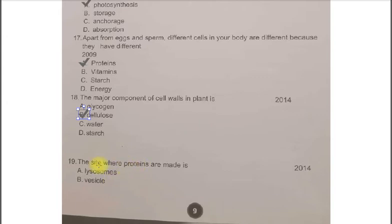Question number 19. The site where proteins are made is A. Lysosome, B. Vesicle. This question is incomplete because other two options have not been mentioned here. So, the correct option would have been the ribosomes. Ribosomes which have already been discussed are called the protein factory of the cell.